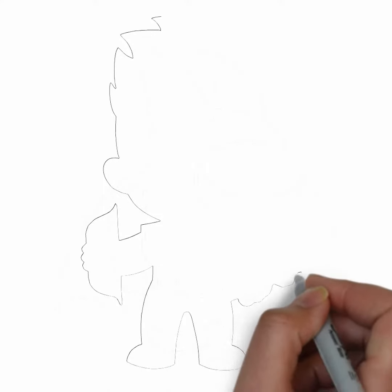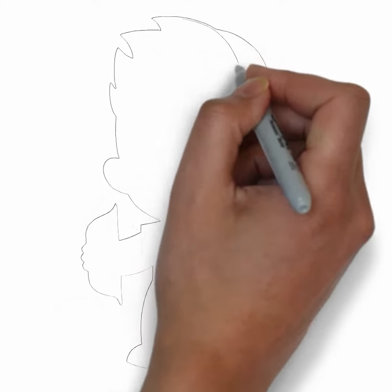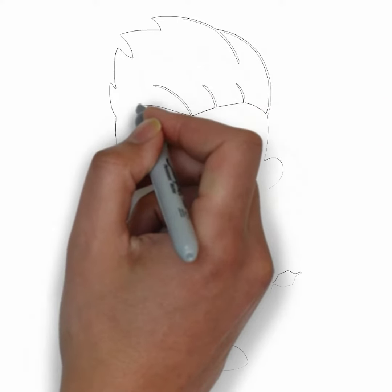First, we'll begin by sketching the basic shape of our subject. Make light, loose strokes to establish the overall form and proportion. Don't worry about details at this stage — just focus on getting the basic shape right.